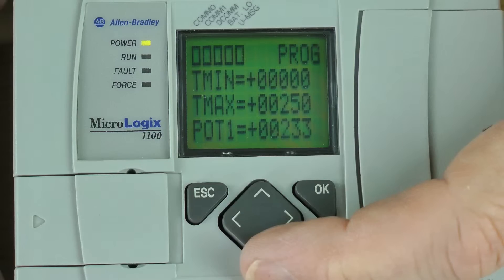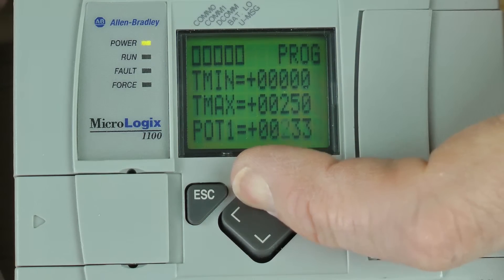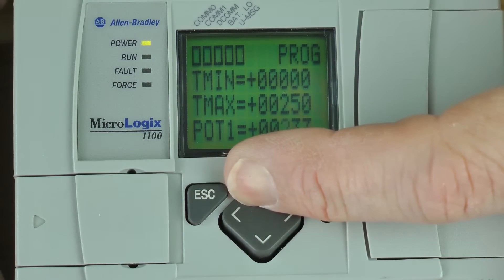And if I try to hold the up arrow key down some more, it doesn't go any higher because my maximum is 250. So it won't go to 300 or 400 because that would be past my maximum.